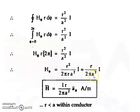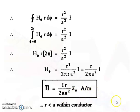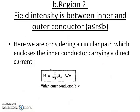Simplifying, H_phi = Ir / (2πa²). So the final equation for H in Region 1 is H = Ir / (2πa²) × a_phi amperes per meter, where r is less than a, that is within the inner conductor.